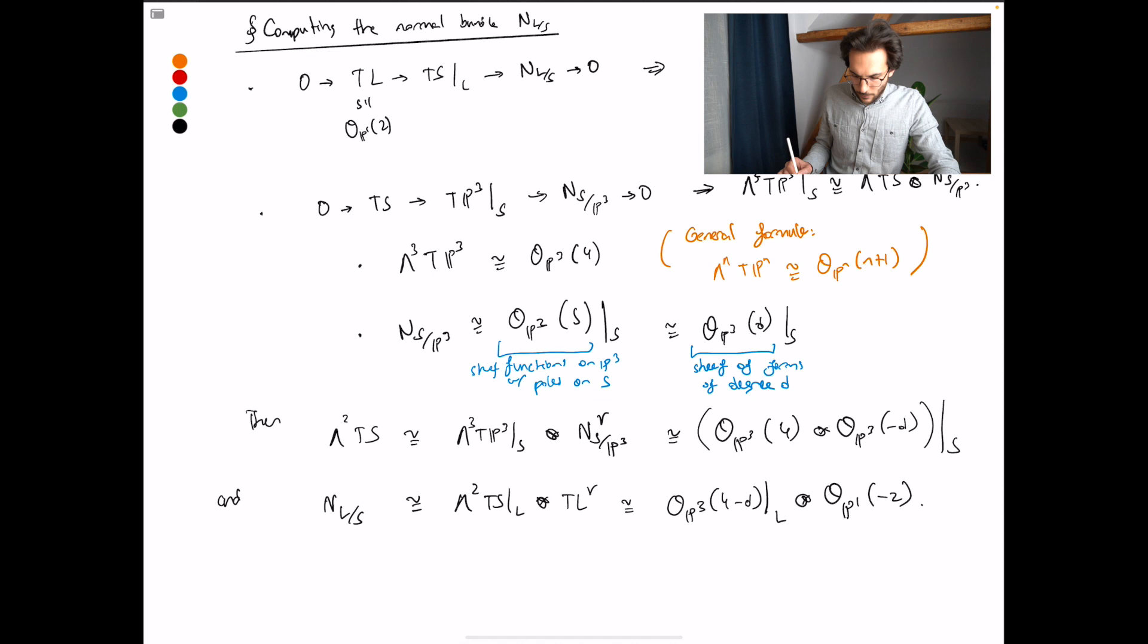I just plugged in the values that we have computed. I'm restricting the degree 4 minus D line bundle on P3, first to S, then to L. Hence the first expression. And what I can do right now is to use the fact that L is a line inside of P3. So something of degree 1, a degree 1 form, will pull back to a degree 1 form on L. Something of degree 4 minus D will pull back to something of degree 4 minus D. So this is OP1,4 minus D, tensor OP1 minus 2, and this is OP1,2 minus D. And at this point we're done. So the normal bundle has degree 2 minus D on P1.